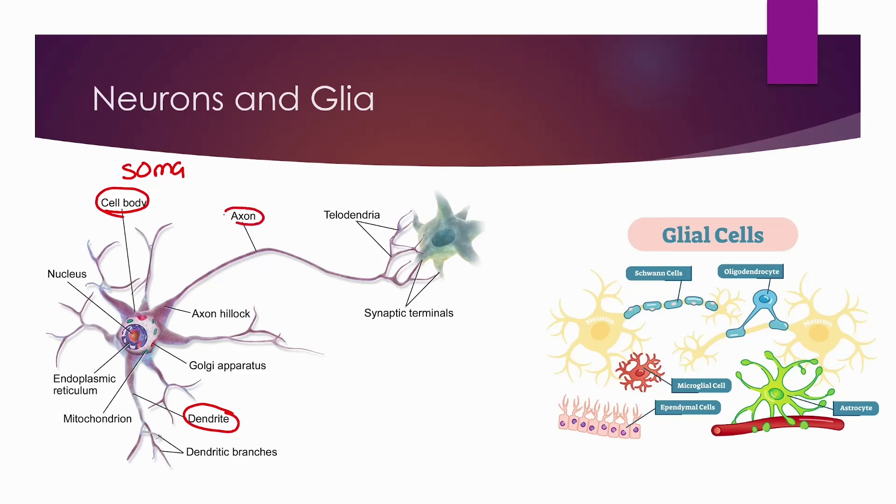The dendrite is the receiver of the cell where it receives neurotransmitters or signals from the presynaptic branch of an axon from another neuron. The dendritic branches will then relay the signal all the way to the soma. Once it reaches the soma, the nucleus will process it.